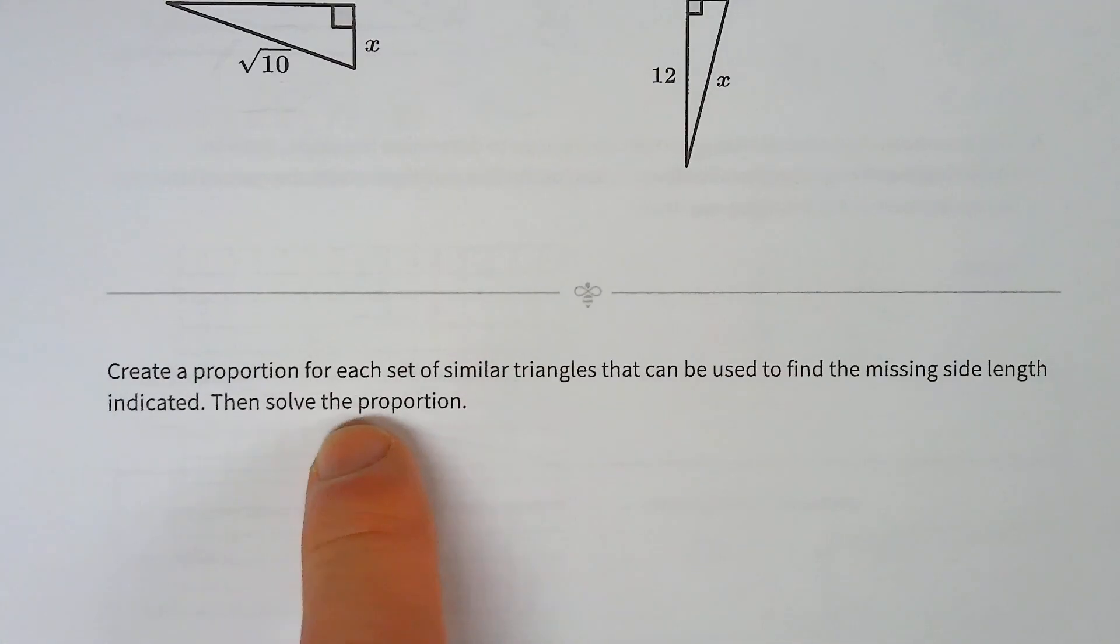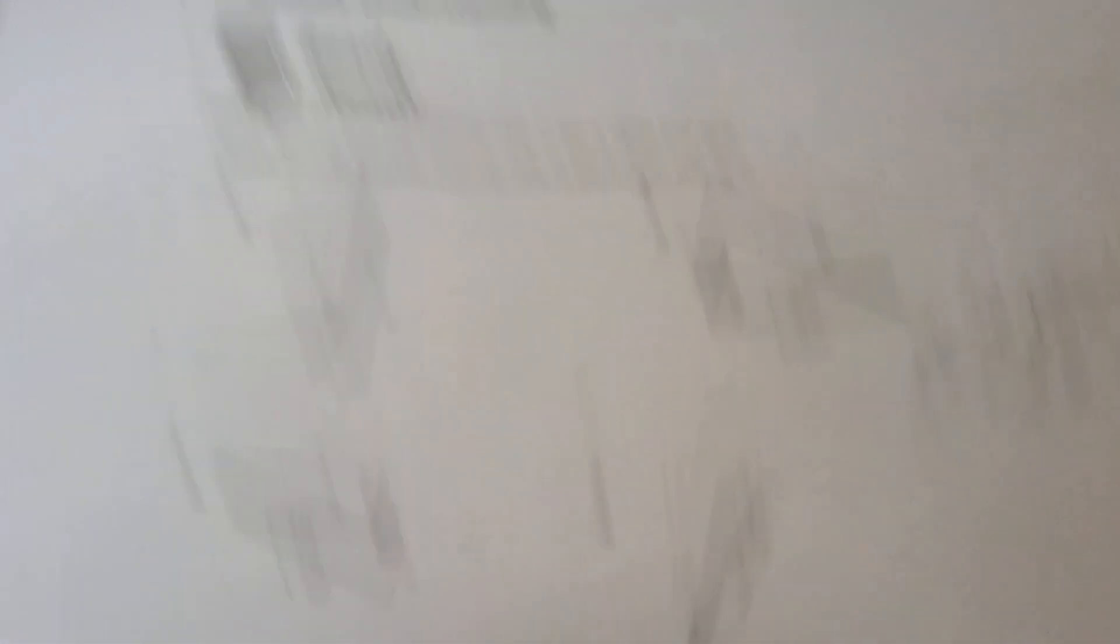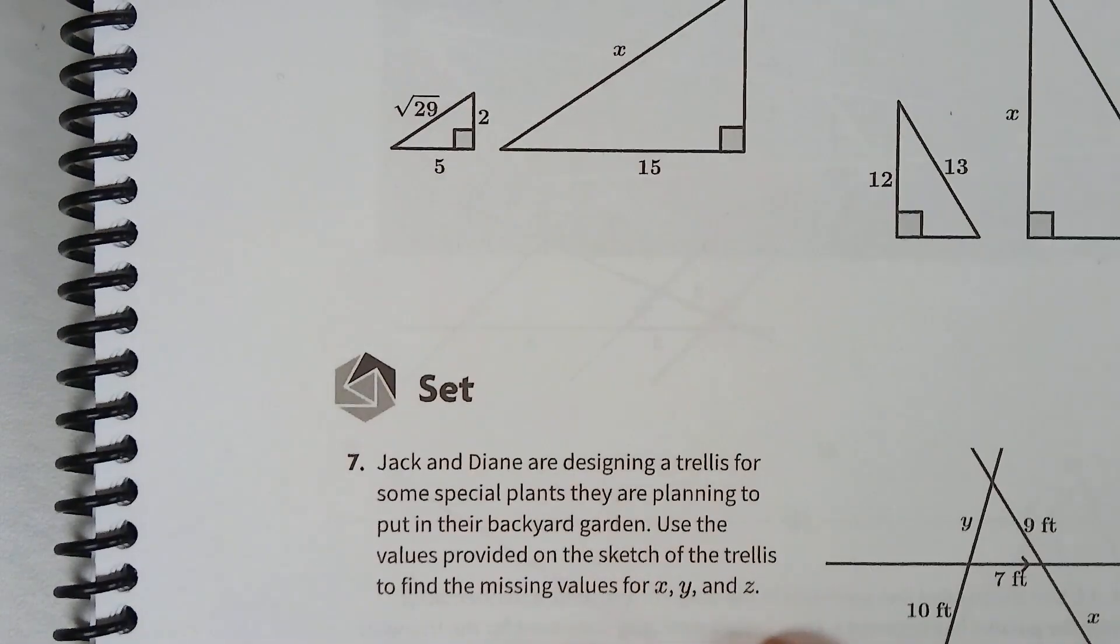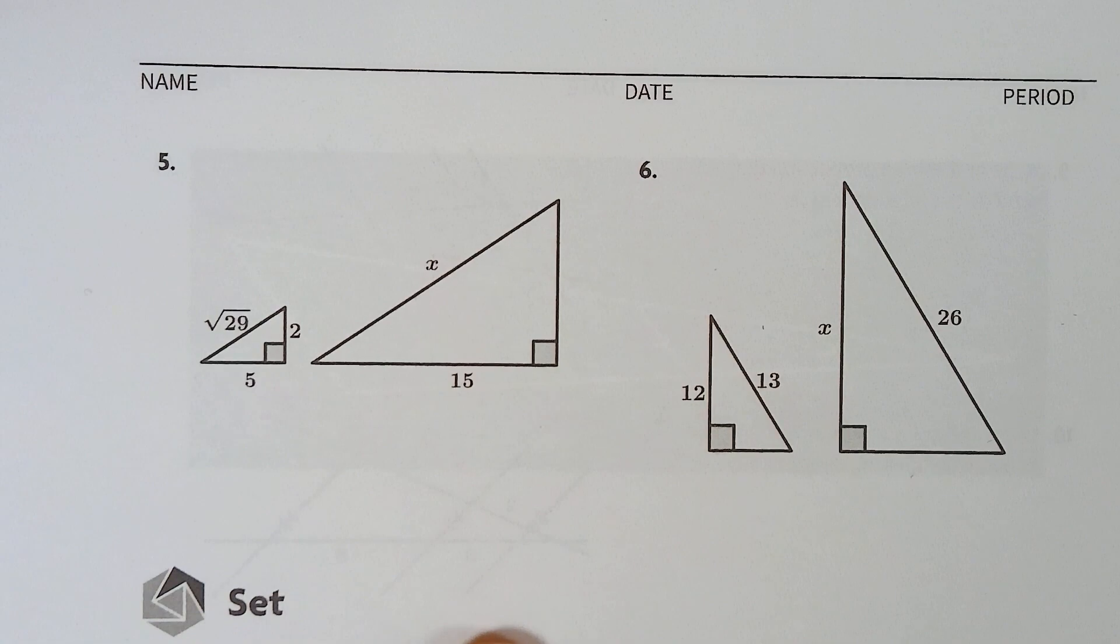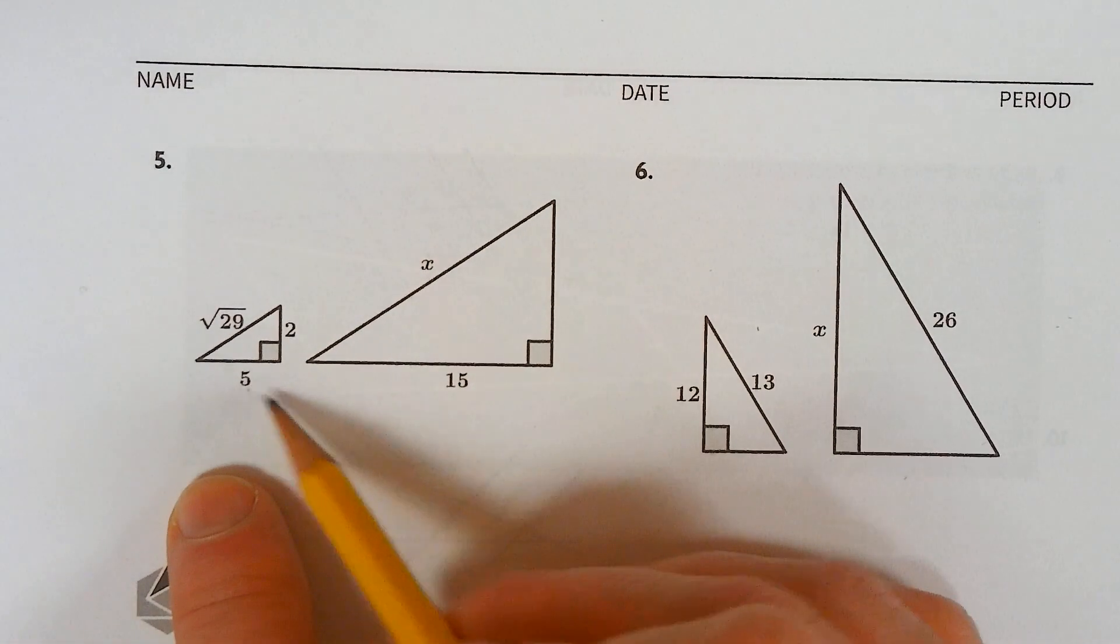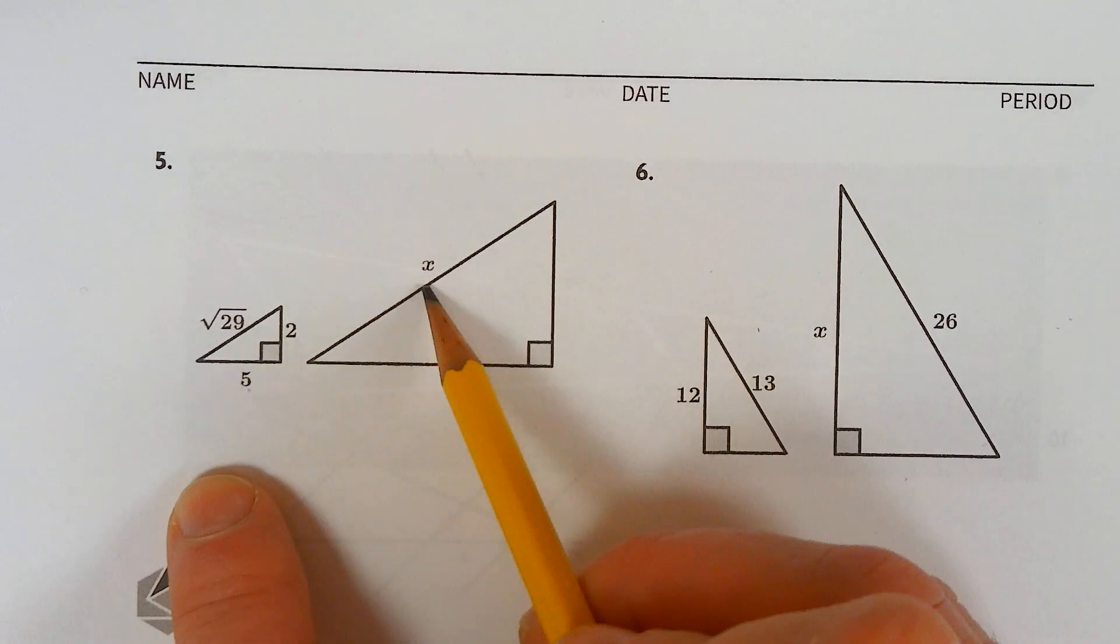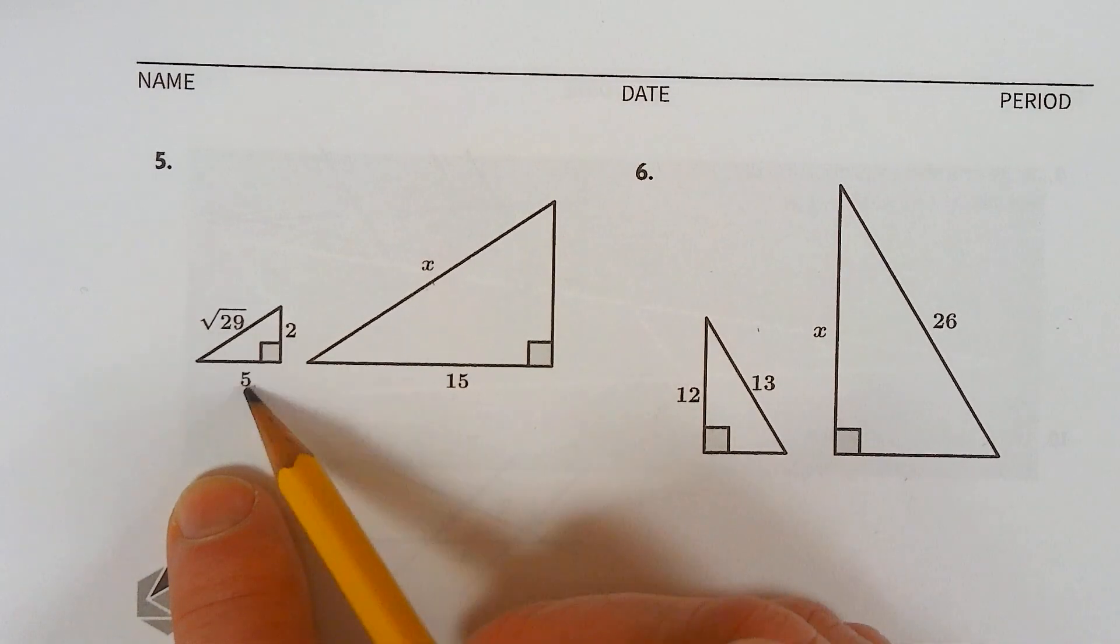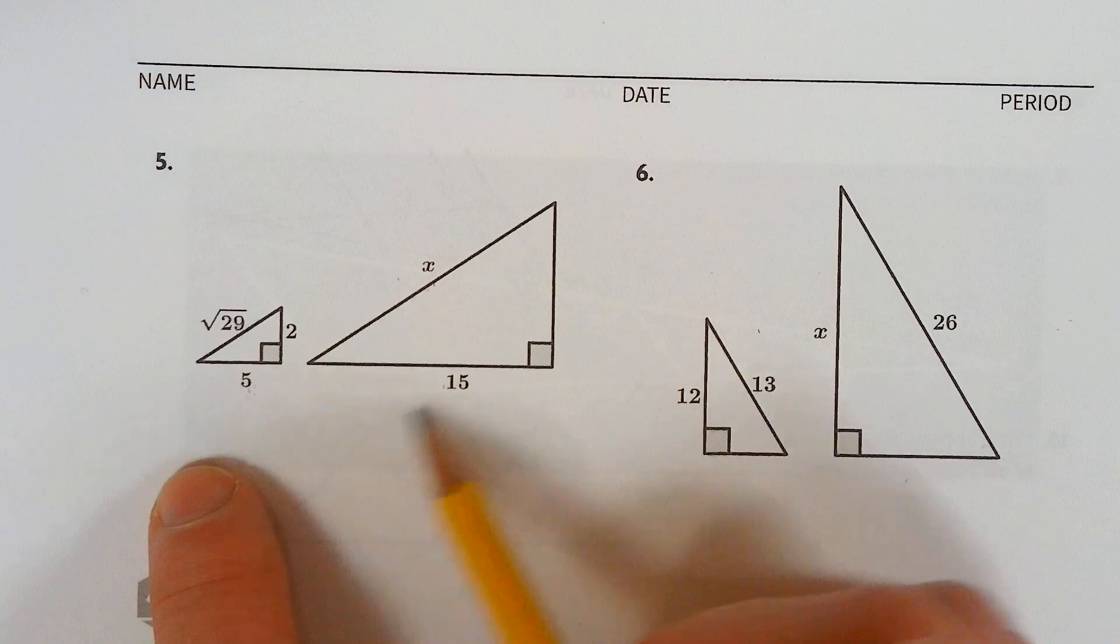Create a proportion for each set of similar triangles that can be used to find the missing side length indicated and solve the proportion. Make a proportion - there's like two ways to do it. You can either do 5 over 15 is the same as square root of 29 over x, or you can do the comparison this way: square root of 29 over 5 equals x over 15, and then you can see the relationship there.